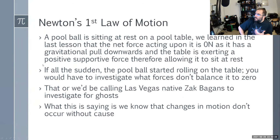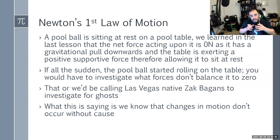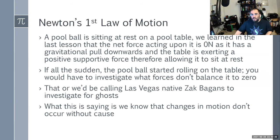If a pool ball is sitting at rest on a pool table, as we learned in the last lesson, the net force acting upon it is zero because it's in static equilibrium — it's not going anywhere. It has a gravitational pull down and a support force pushing it up. If the pool ball suddenly started rolling, you'd have to investigate what forces caused it, because something caused the net forces to no longer be zero.